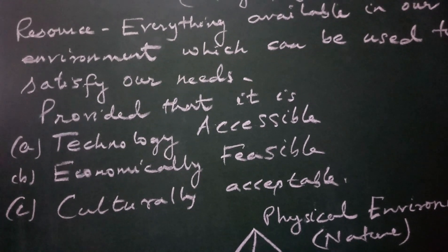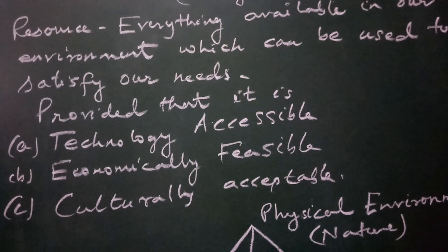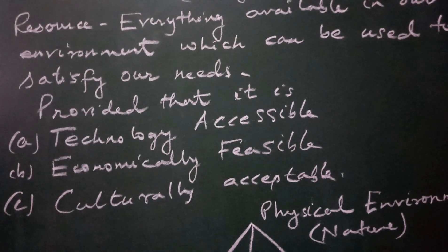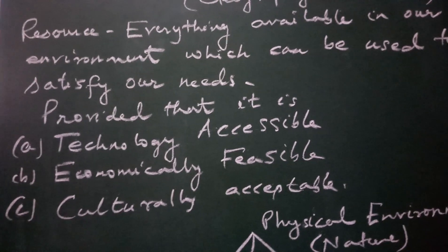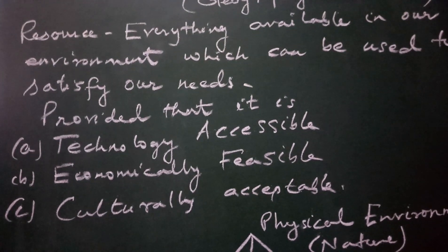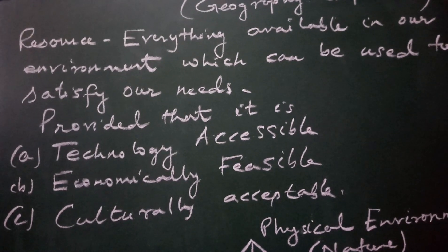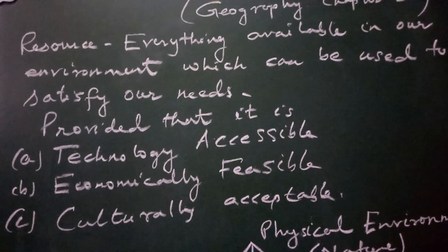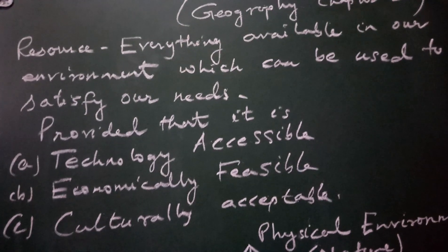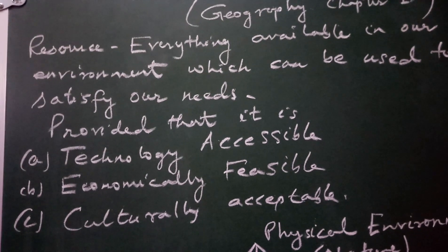Economically feasible means we must have enough money, and the cost of production must also be within our reach. The third is culturally acceptable. Culturally acceptable means that the people of the society — the human beings — must accept that thing as a resource. So we can define resource as everything available in our environment which can be used to satisfy our needs, provided that it is technologically accessible, economically feasible and culturally acceptable.